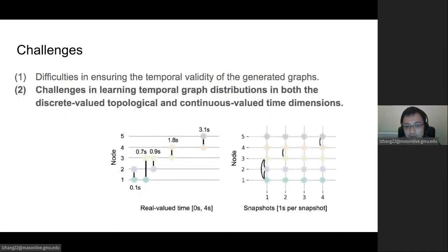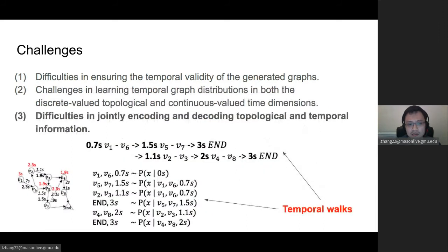The second challenge in learning temporal graphs is the distribution in both the discrete value topology and continuous value time dimensions. As we said, there's a lot of work on both real value time and discrete time. Third difficulty is in jointly encoding and decoding topology and temporal information. For example, this graph, if we add the continuous time to it, you will see that such temporal walks can be sampled differently during different time and also consider different topologies as each of these dynamic systems.